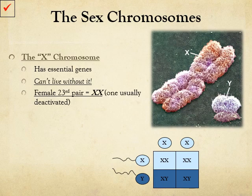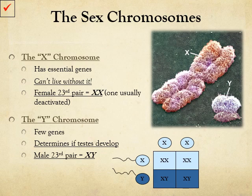The X chromosome has all of the essential genes on it — we cannot live without the X chromosome. In females, the 23rd pair is XX, with one of the X's deactivated because you don't need double the information. The Y chromosome, by contrast, has very few genes and has one job: to determine if the testes develop. If the Y is present, the testes develop. So in males, the 23rd pair is XY. There's always a 50-50% chance that there will be a boy or a girl from a fertilization.